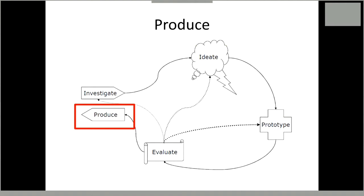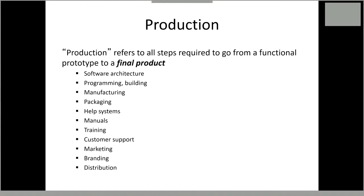If your evaluation shows everything looks great, you can move into production — the part that means translation into something potentially usable in a clinical trial. At this point you build the actual software architecture, manufacture and package hardware if applicable, create help systems, manuals, and training. Eventually comes marketing — whether to clinicians for a major research trial or to customers if something's going to the commercial market.